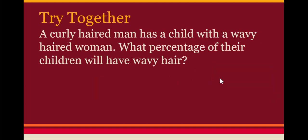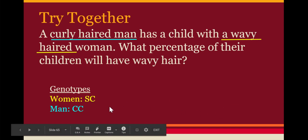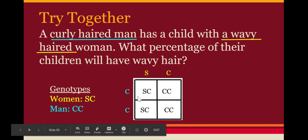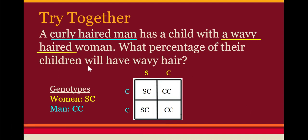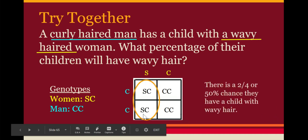Let's try this problem: a curly-haired man has a child with a wavy-haired woman. What percentage of their offspring will have wavy hair? First, define genotypes: the curly-haired man is homozygous for curly — C-C. The wavy-haired woman has the intermediate trait, so she's the heterozygote — S-C. Setting up the Punnett square with mom's alleles on top and dad's on the side, two out of four boxes show S-C — the heterozygote — meaning a 50% chance of wavy-haired offspring.